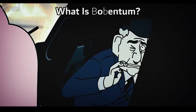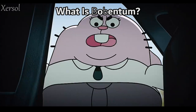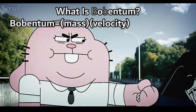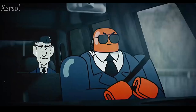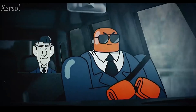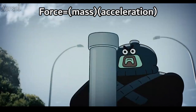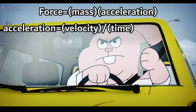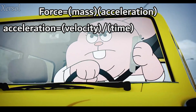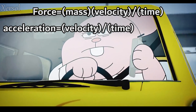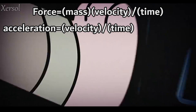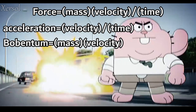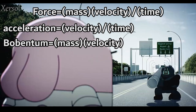Momentum is defined as the mass times velocity of an object, or how fast it's going multiplied by how heavy it's going. Aside from this, you can use momentum to find force. Force is just mass times acceleration. Acceleration is just velocity divided by time. So if we replace acceleration with velocity divided by time, we have force equals mass times velocity divided by time. We know that mass times velocity is just momentum, so force is just a change in momentum over time.